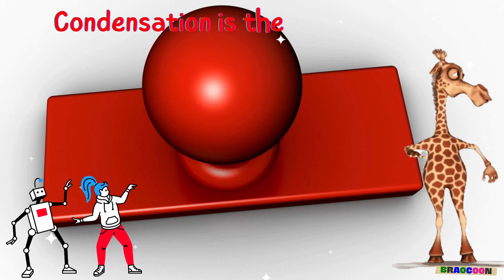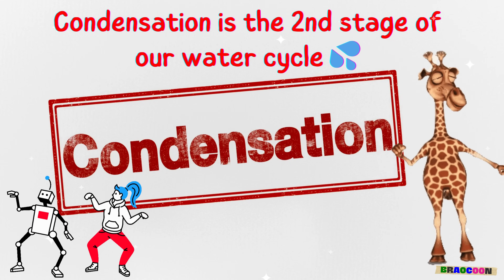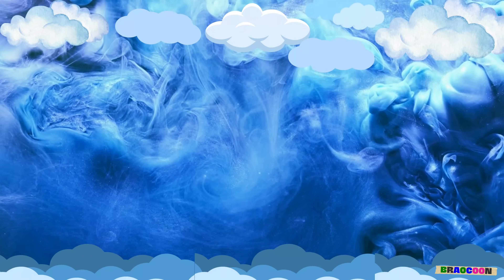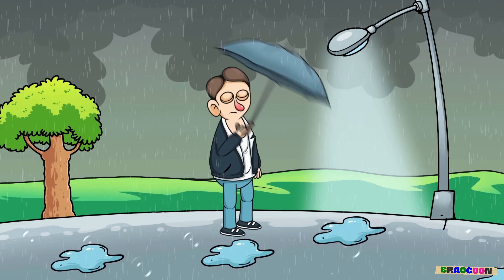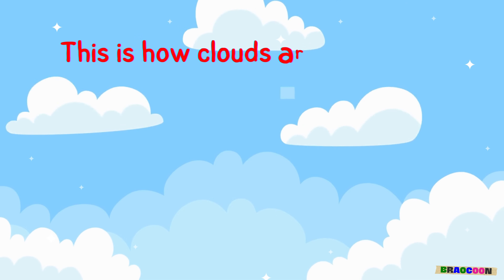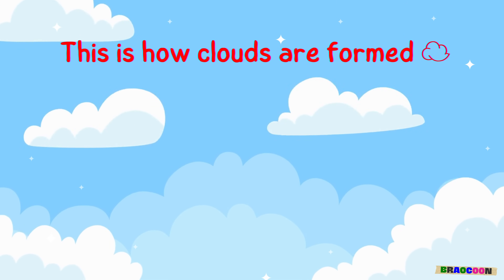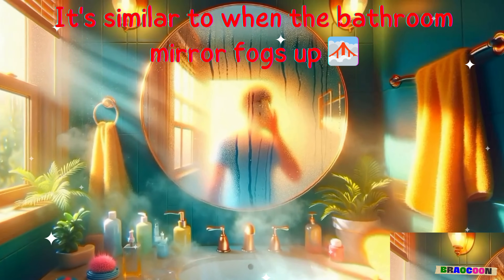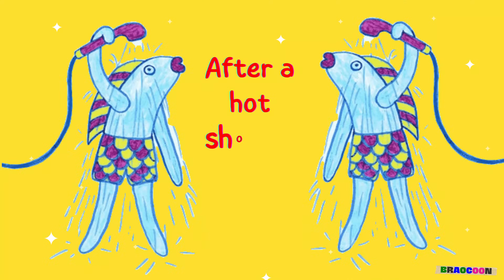Condensation is the second stage of our water cycle. As water vapor goes up and meets cooler air, it turns back into tiny droplets of water. This is how clouds are formed. It's similar to when the bathroom mirror fogs up after a hot shower.